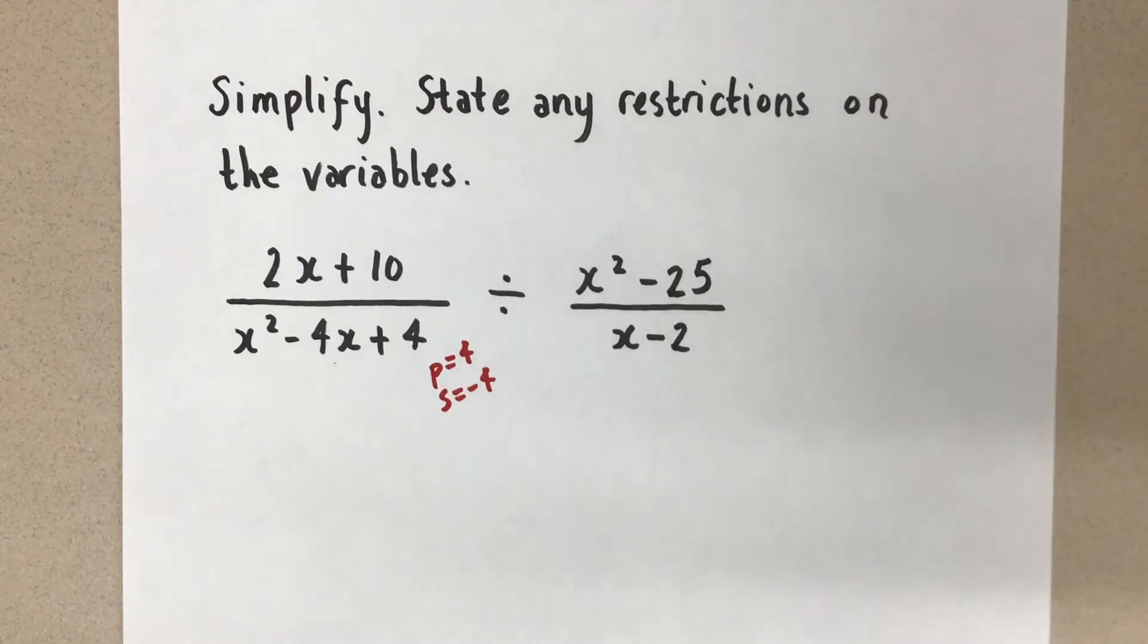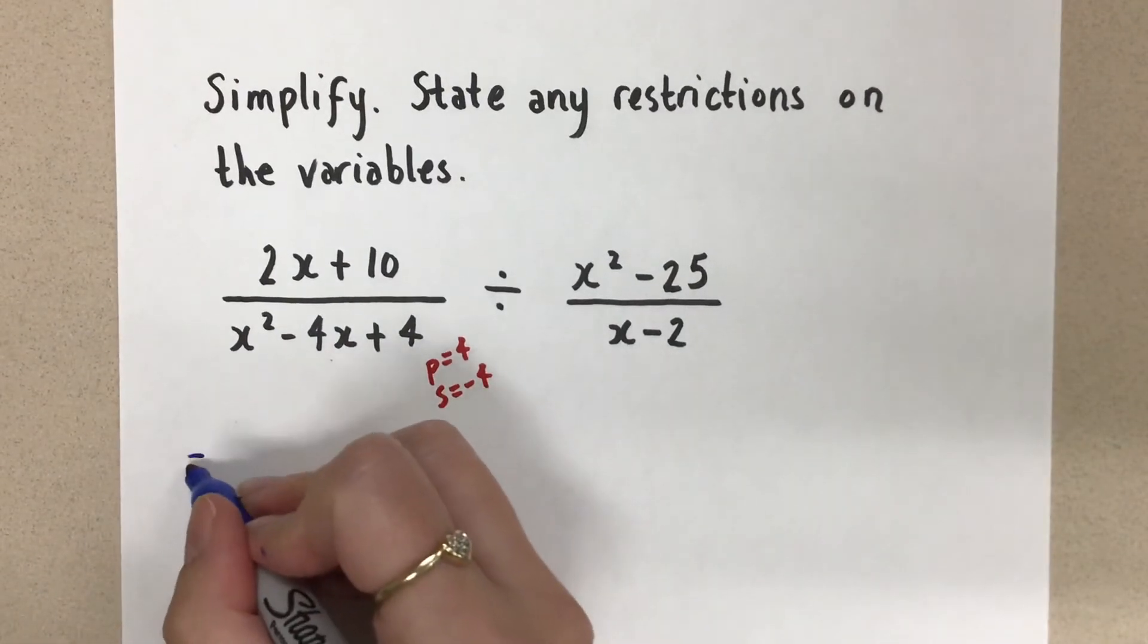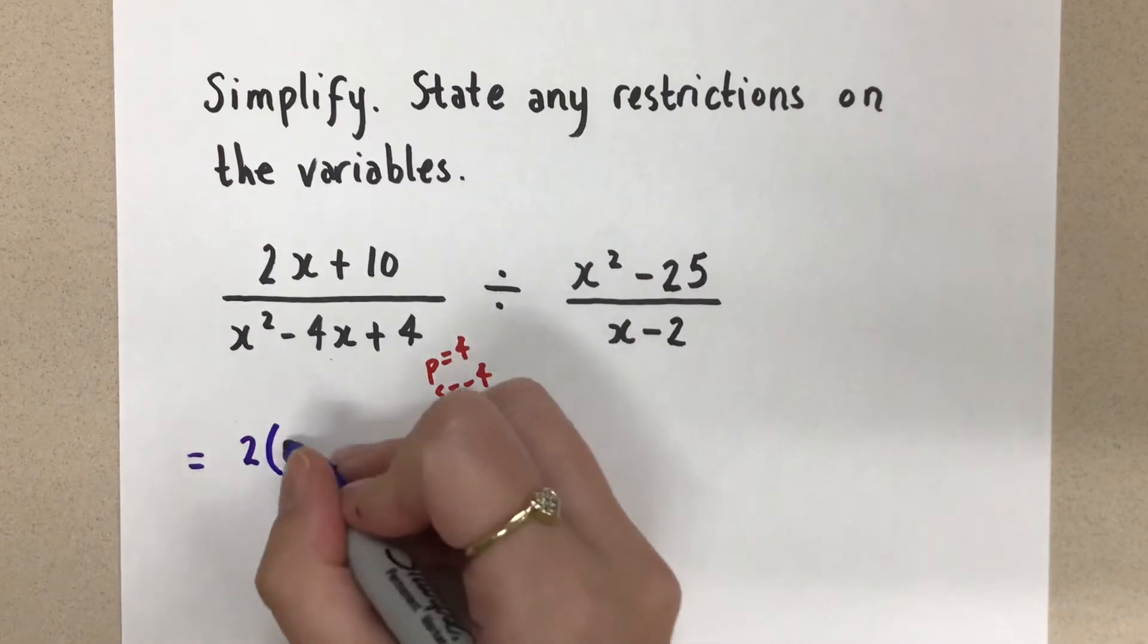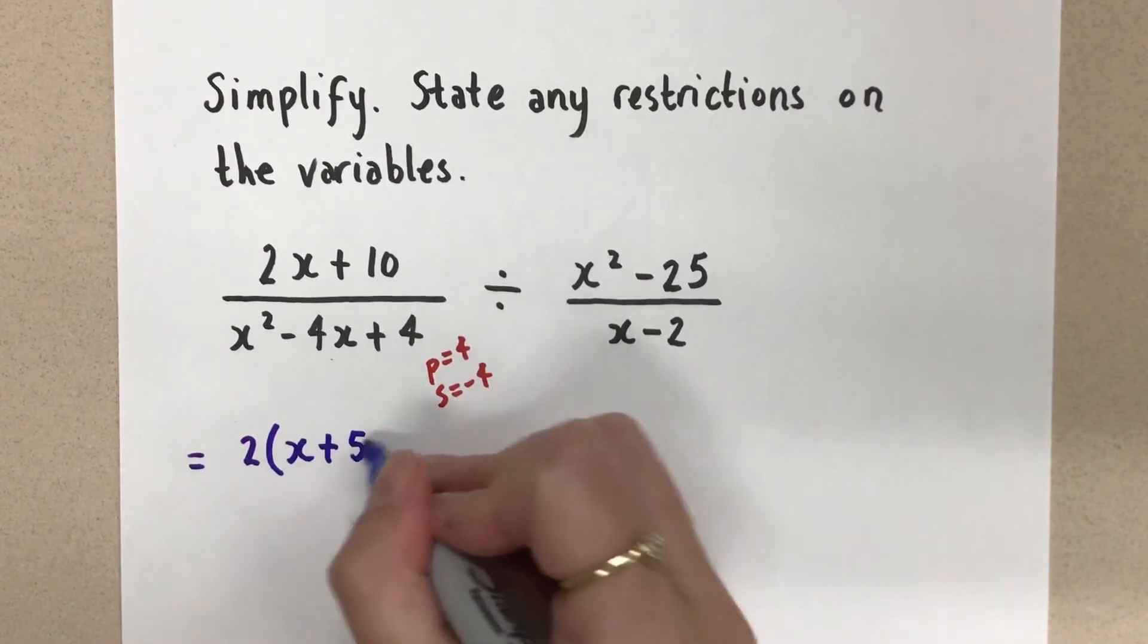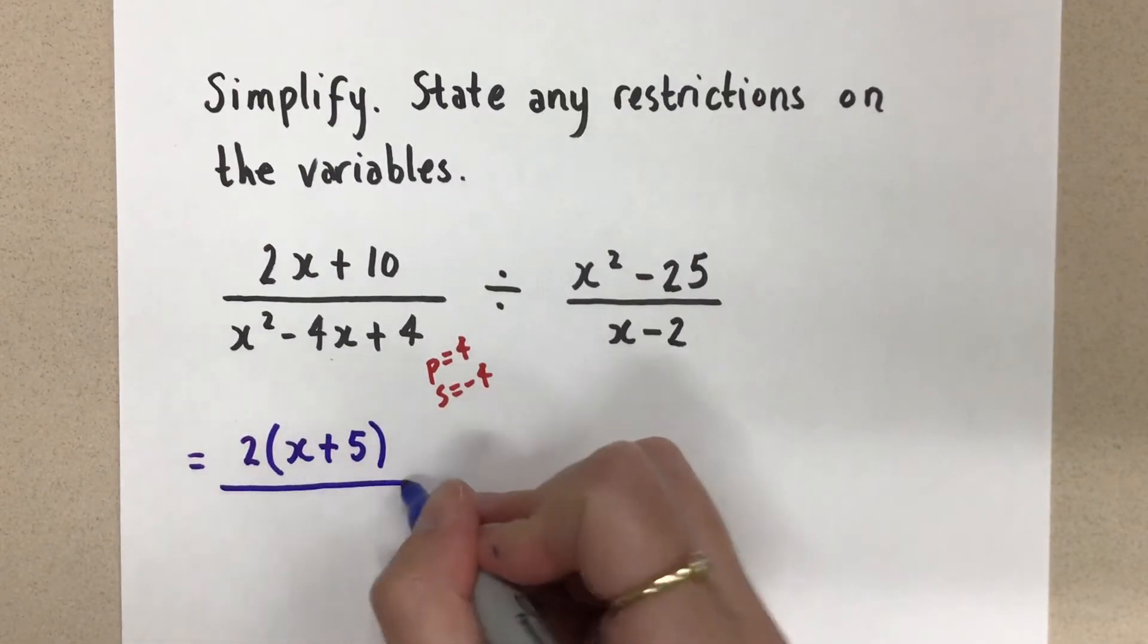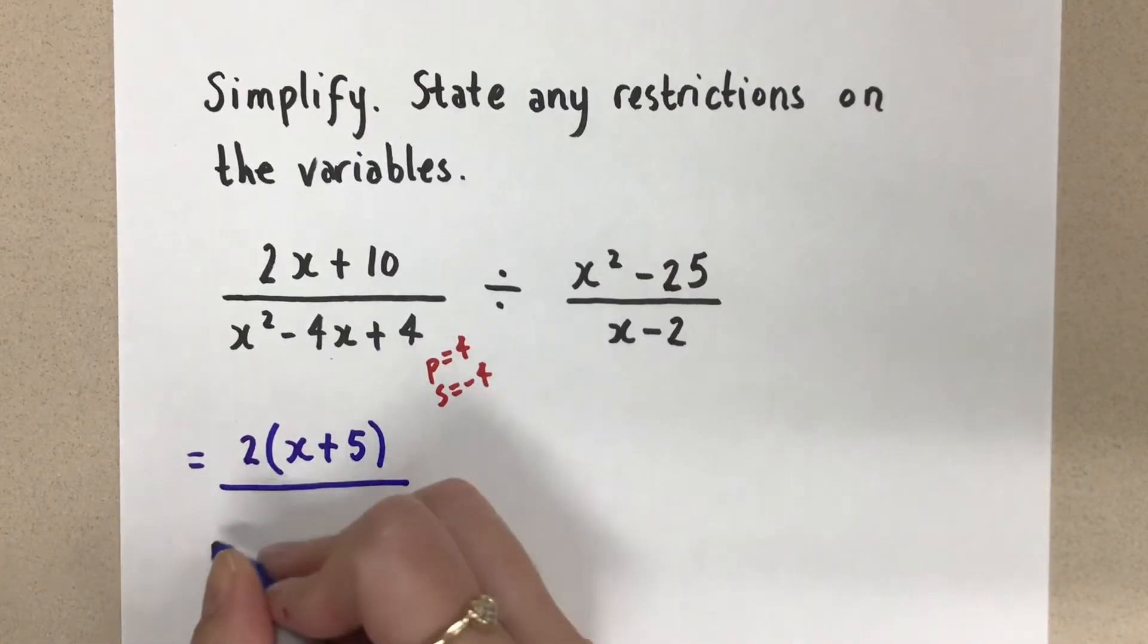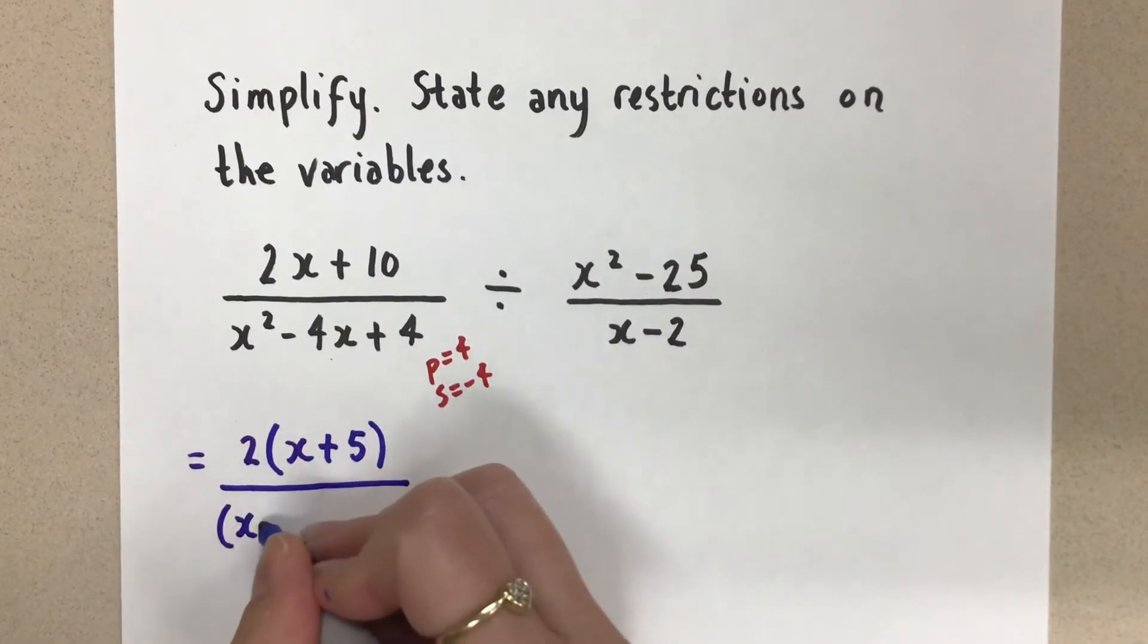So I'm going to rewrite this whole thing with all of the expressions factored. Let's do that. So the first numerator here, factoring out that 2, and I get x plus 5 in the brackets. In the denominator, I had a product of 4 and a sum of negative 4, so my numbers there are negative 2 and negative 2.